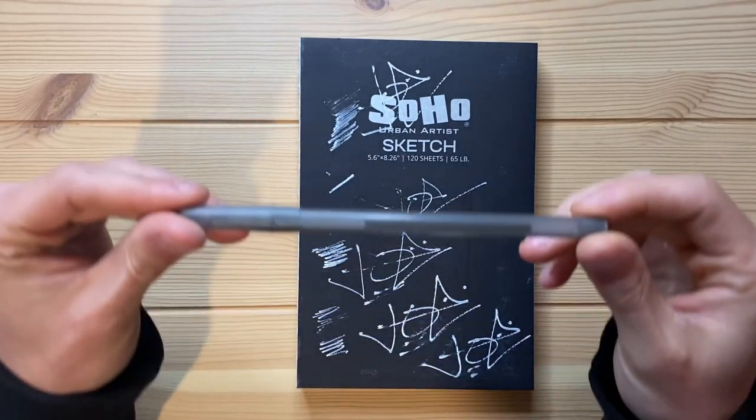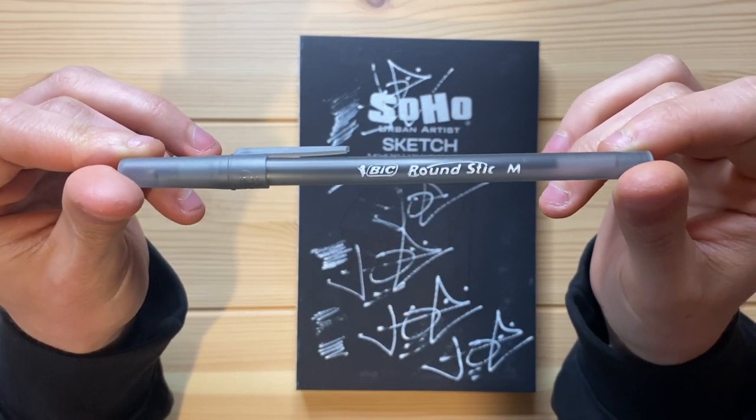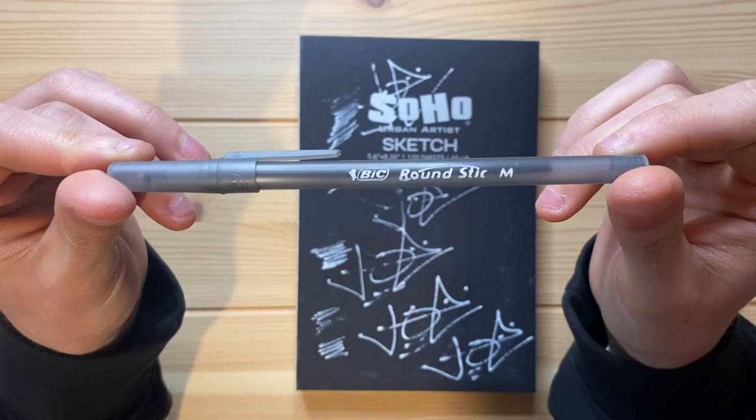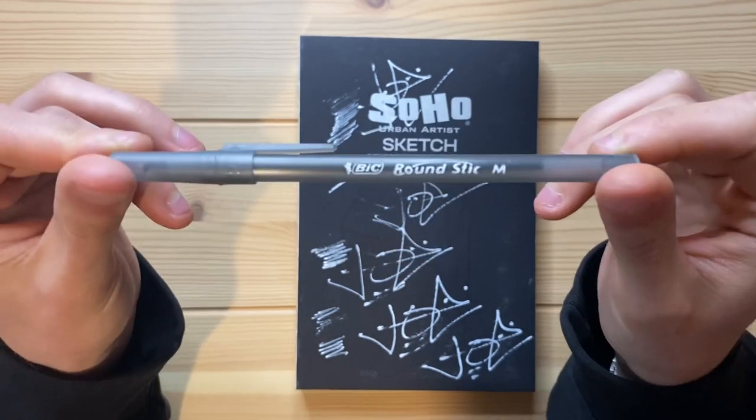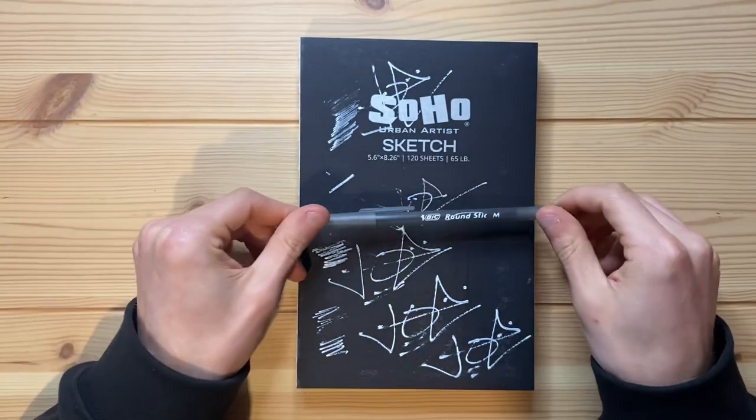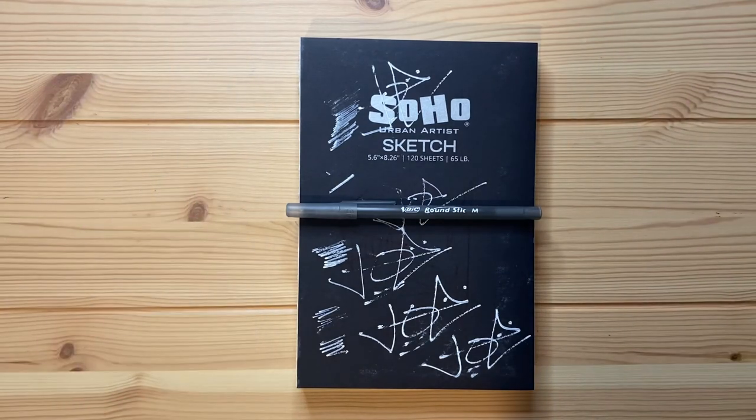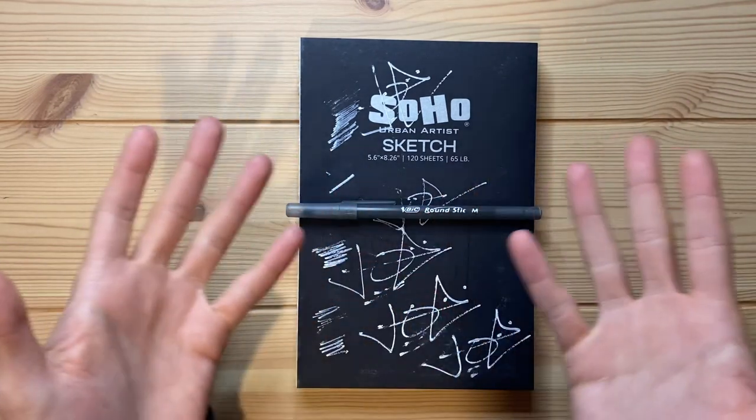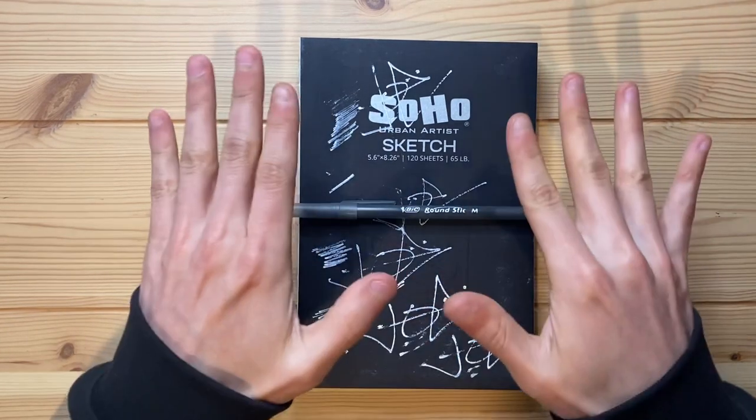Alright, so today I'm going to be drawing a fish with a Big Round Stick pen. This is one of the cheapest pens you can buy at a normal retail location in the United States, typically going for about 10 cents a pop, but you have to buy a pack of like 10 for a dollar.